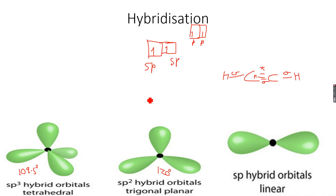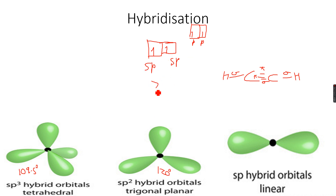An easy way to remember sp hybridization is that there are only two hybridized orbitals, so there are two sigma bonds. You can see that there are two sigma bonds for each carbon atom.